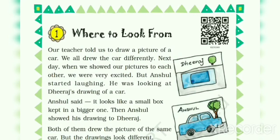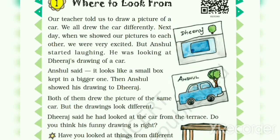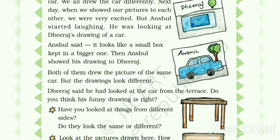Here is a story of two students. Our teacher told us to draw a picture of a car. We all drew the car differently. Next day, when we showed our pictures to each other, we were very excited. But Anshul started laughing — he was looking at Dhirat's drawing of a car. Anshul said it looks like a small box kept in a bigger one. Then Anshul showed his drawing to Dhirat. Both of them drew the picture of the same car, but the drawings looked different. Dhirat said he looked at the car from the terrace. Do you think his funny drawing is right?